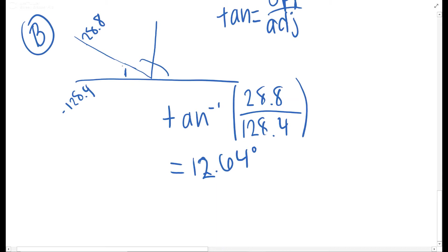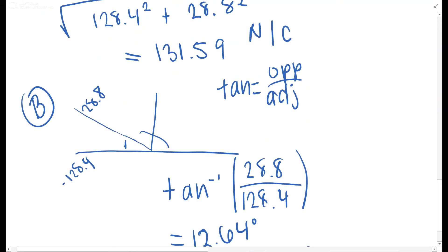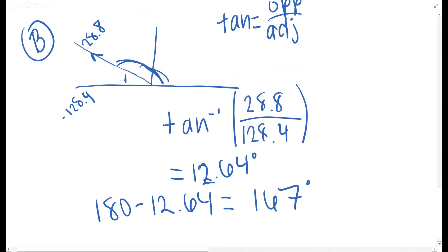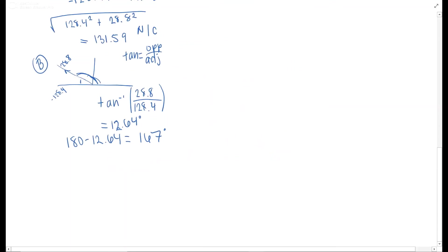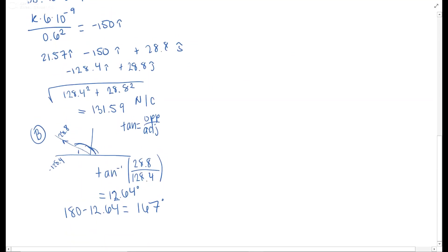But that is this angle right here, and we are actually looking for this one because it does say to measure counterclockwise from the positive x axis. So we are doing 180 minus this 12.64 to get us about 167 degrees. So that is the direction, and that's about 167 degrees with magnitude of 131.59 newtons per coulomb.